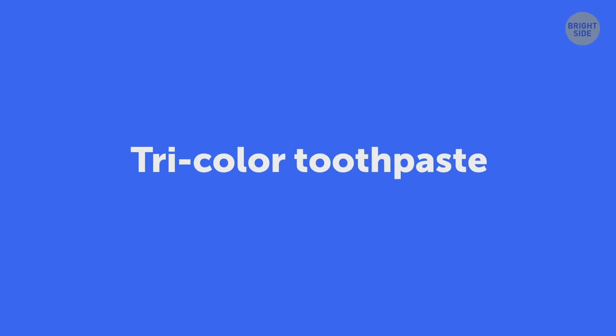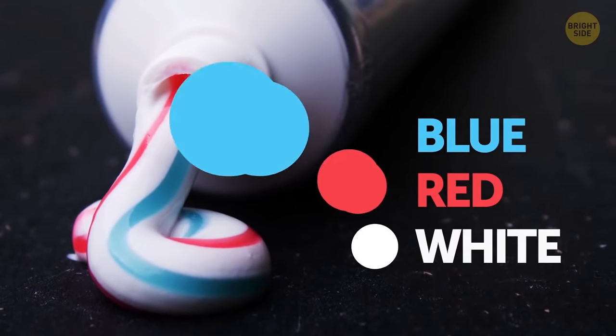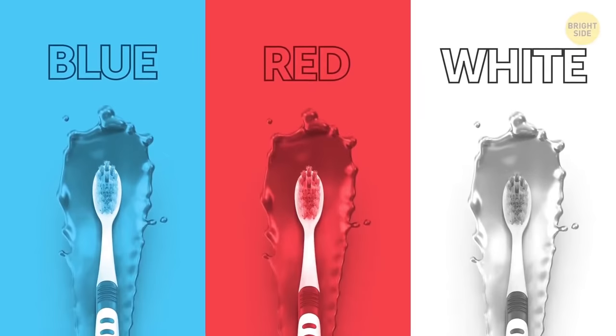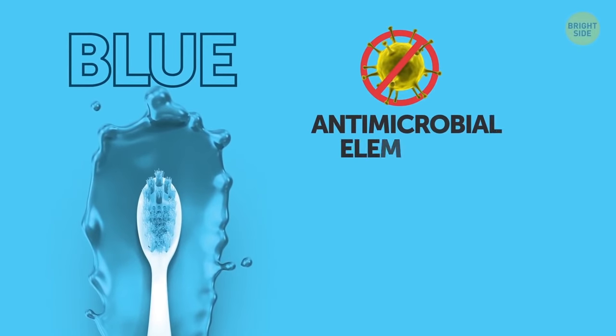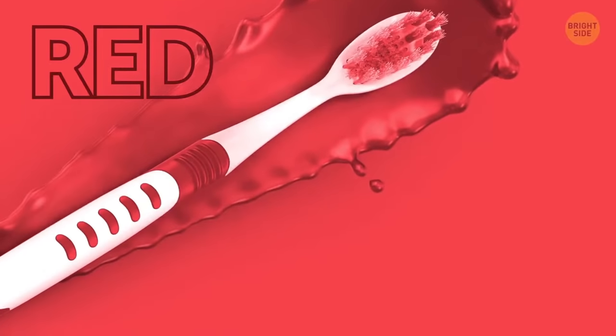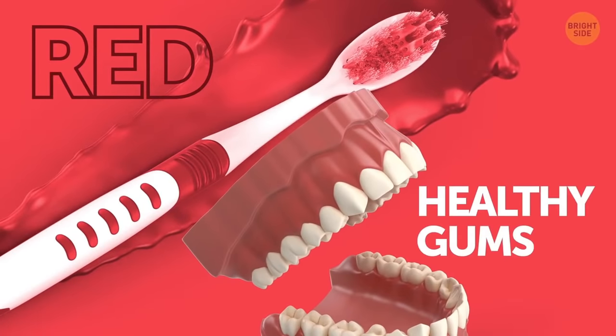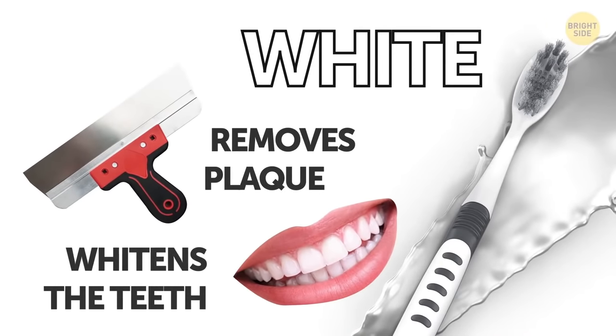Lots of toothpastes have blue, red, and white stripes. Such coloring isn't mere aesthetics, all the stripes have their own ingredients and purposes. The blue one contains antimicrobial elements and has a breath-freshening effect. The red one includes some ingredients crucial for healthy gums. And the white, most valuable stripe, removes plaque and whitens the teeth.